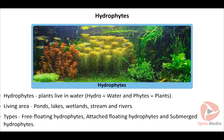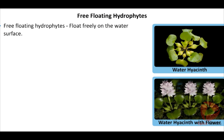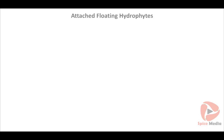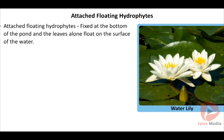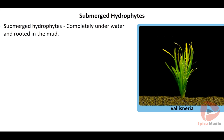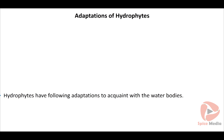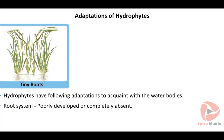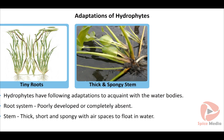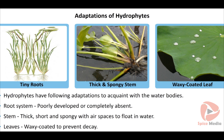Plants which float freely on the water surface are called free floating hydrophytes, e.g. water hyacinth. The stem is thick, short and spongy with air spaces to float in water. Leaves have a waxy coat which prevents their decay in excess water.